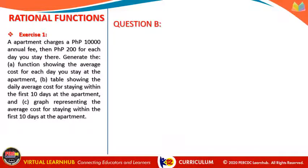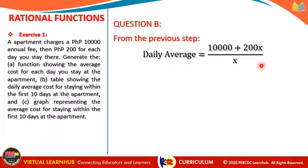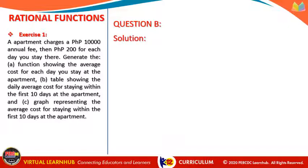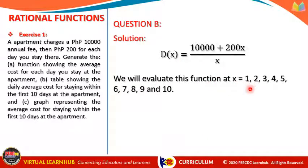Let's now go to question B. From the previous step, we got the daily average function: (10,000 + 200X) / X. The question asks us to make a table showing the average cost of staying within the first 10 days. We will evaluate this function at X = 1, 2, 3, 4, 5, 6, 7, 8, 9, and 10 — substituting each value of X to get the daily average for each day.